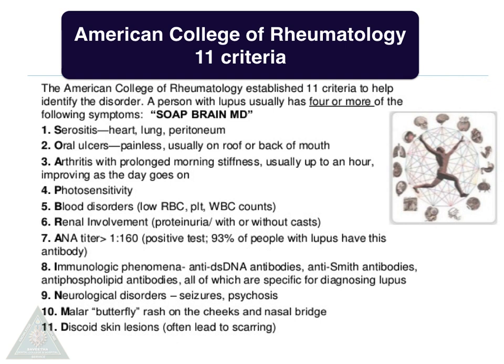The acronym SOAP BRAIN MD is used to remember the diagnostic criteria. S stands for serositis — involving the heart, lung, and peritoneum. O for oral ulcers, which are painless and usually on the roof or back of the mouth. A for arthritis. P for photosensitivity.